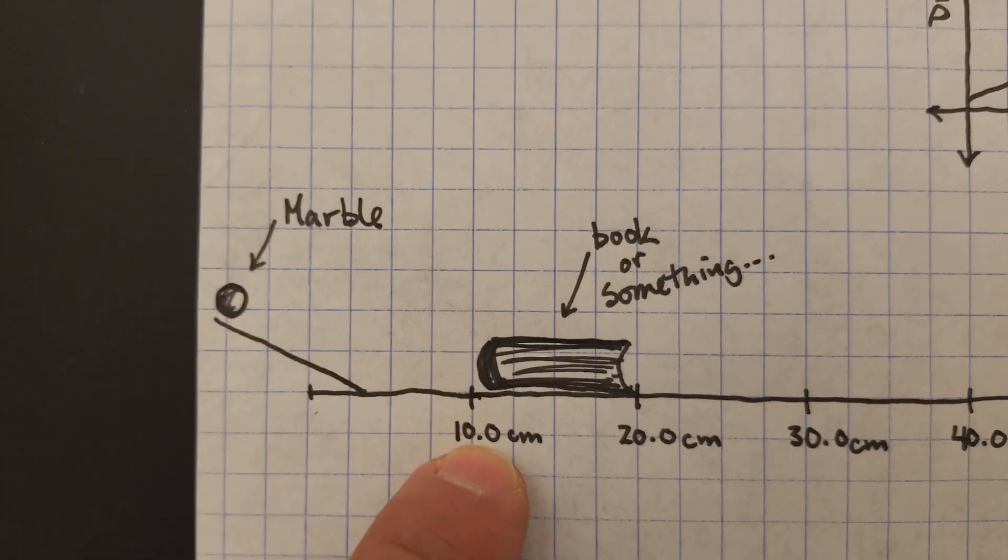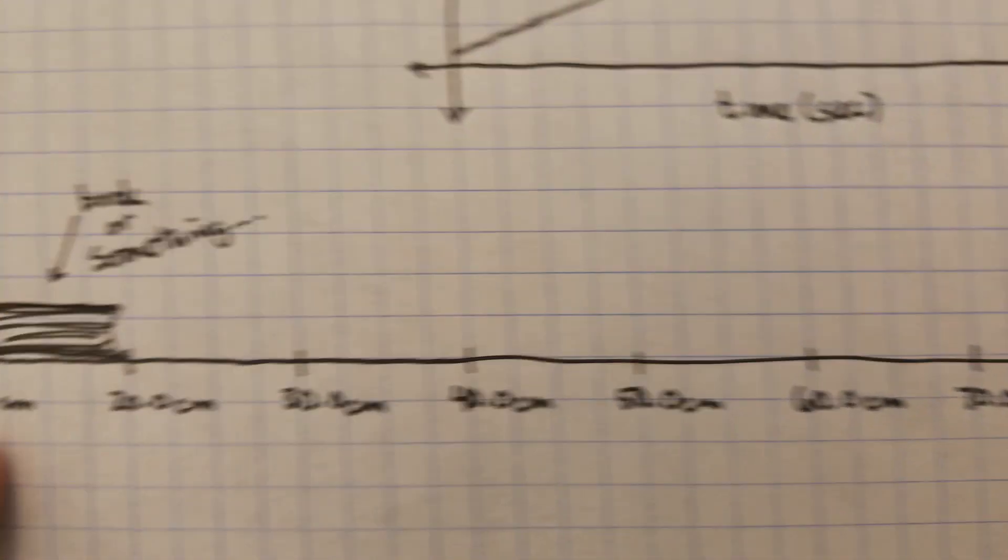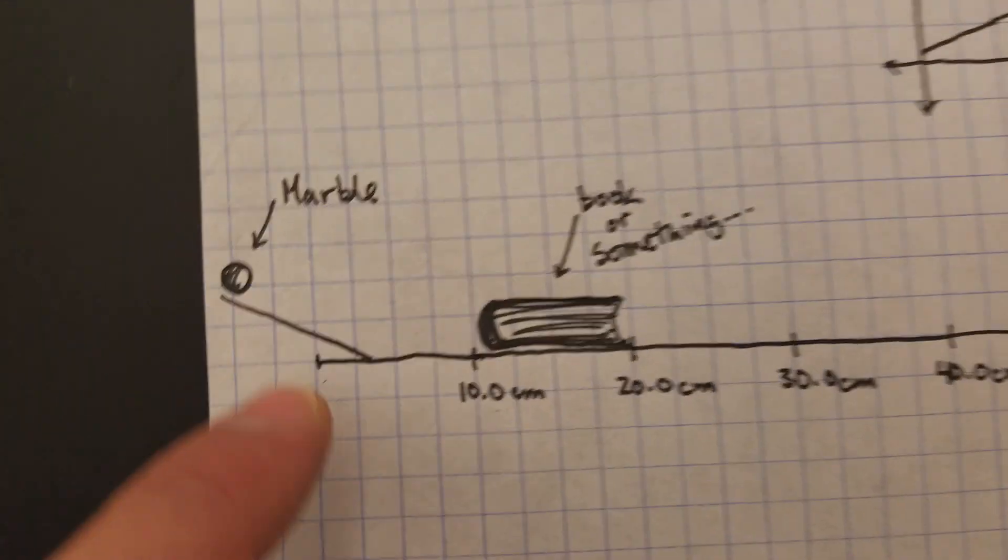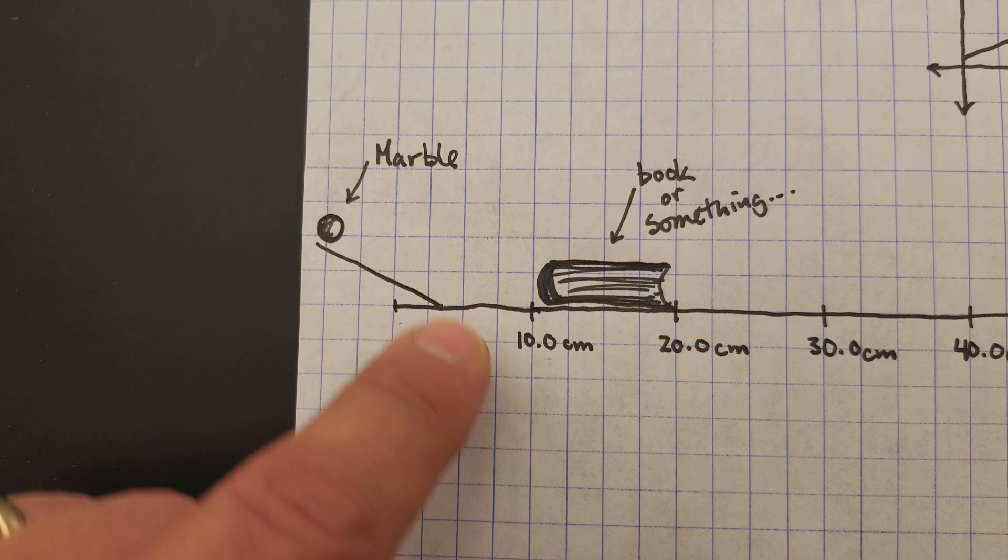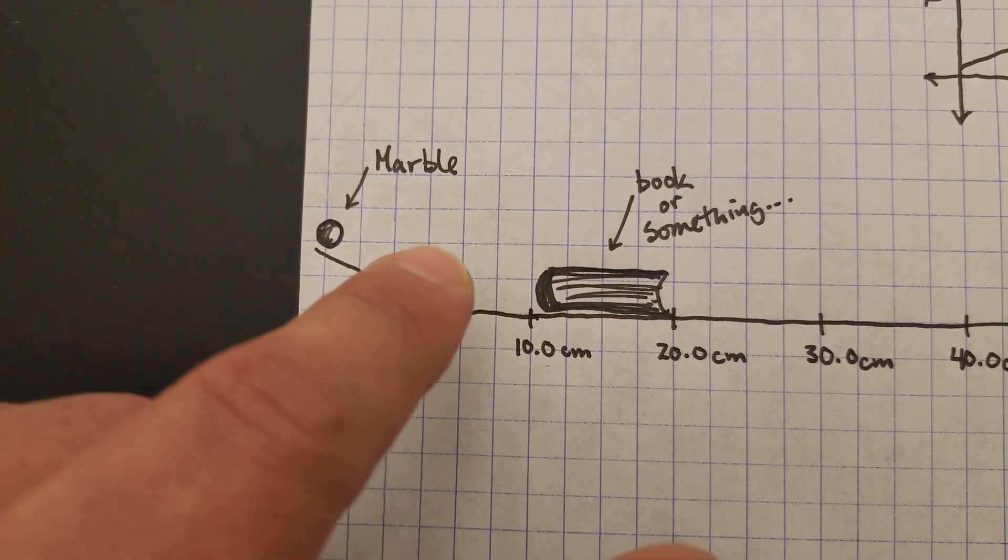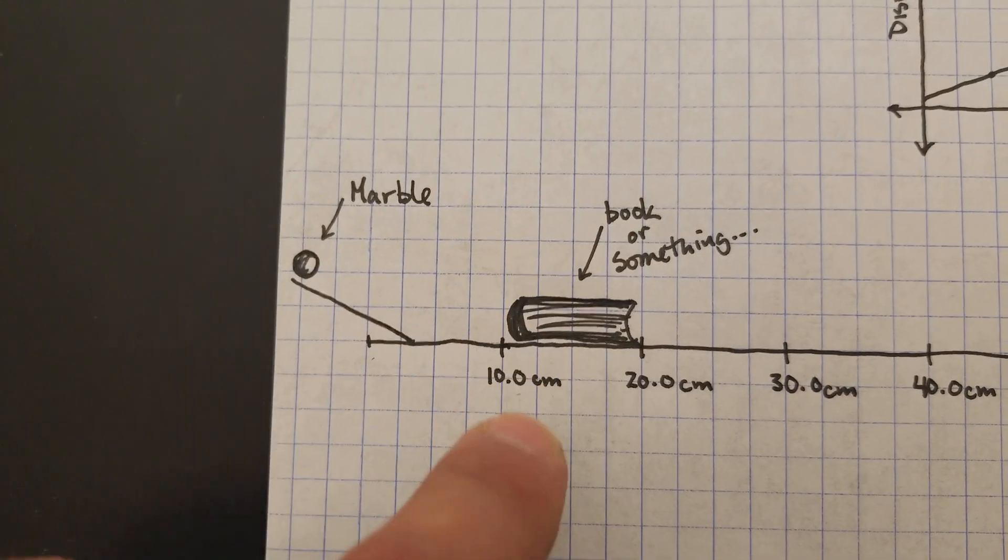So after we measure these things out and we want to be as accurate as we can, then we're going to roll the marble down the ramp and start the timer when it hits the bottom of the ramp and stop the timer when it hits the object.